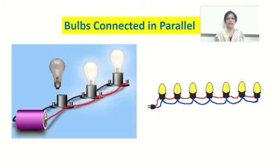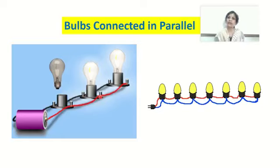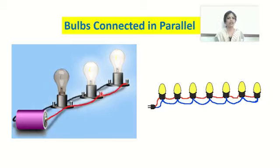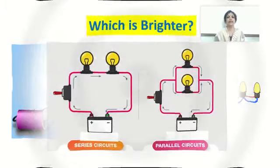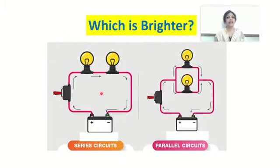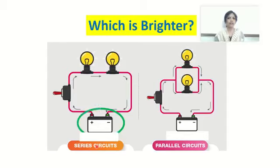When bulbs are connected in parallel, every bulb receives a separate potential difference. So even if one bulb doesn't glow, the remaining bulbs are separately connected to the battery and receive equal potential difference, and hence they continue to glow. Some decorative lightings use series connection, while others use parallel. This is also a common exam question — in which case is the bulb brighter: series or parallel?